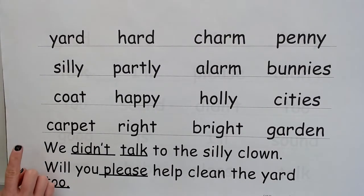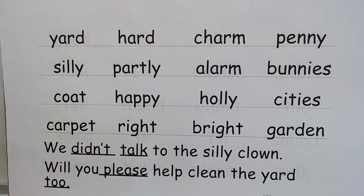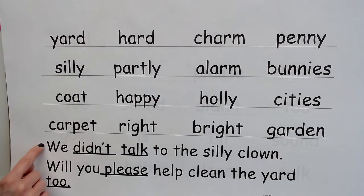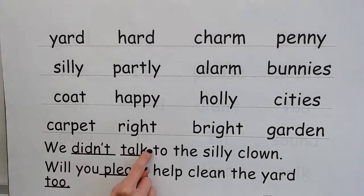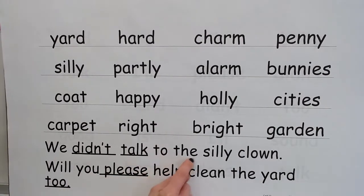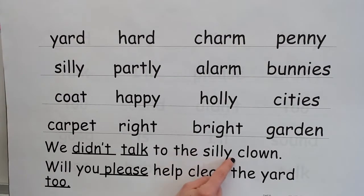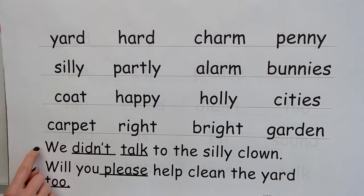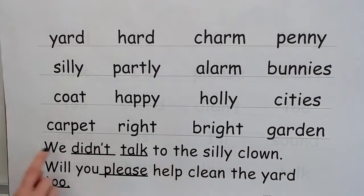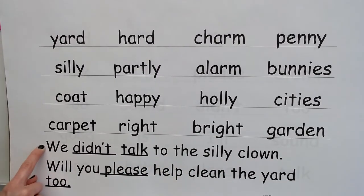Excellent job word reading. Let's go down to our sentences. Most of these you're going to be able to read the words by yourself. There's only one I'm going to pull out for practice. Get ready: word — we; contraction — didn't; word — talk; word — to; word — the; word — silly; word — clown. Ghost this sentence. Get ready — read: We didn't talk to the silly clown. Yes, we didn't talk to the silly clown.